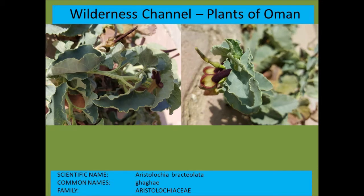Aristolochia bracteolata — this family is very interesting. The flowers form brownish, pipe-shaped blooms — shaped like a curved, pipe-smoking pipe. They're also called birthworts or calico pipes.